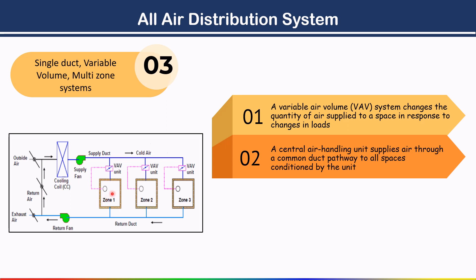Suppose in zone one, the heat load calculation requires 1000 CFM. This was designed for 10 people sitting in the space. However, if the number of people decreases for some reason, we need to supply less than 1000 CFM of conditioned air.